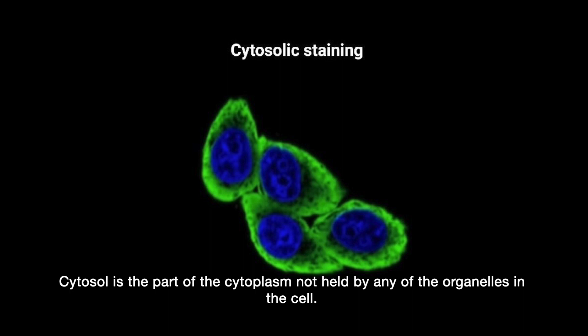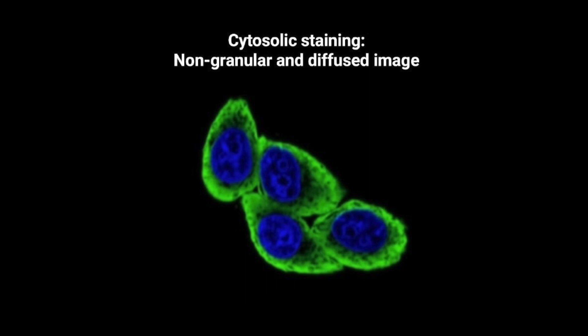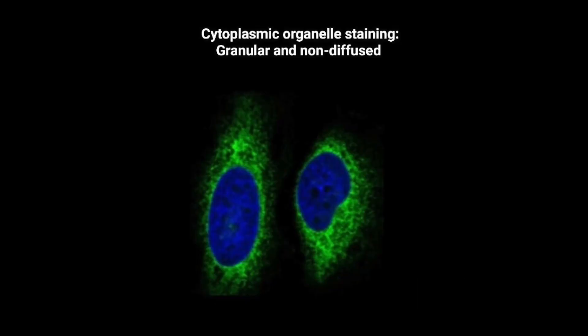It is actually the cytosol. The cytoplasm of a cell consists of both the cytosol and the organelles. Cytosol is the part of the cytoplasm not held by any of the organelles in the cell. Cytosol proteins are able to diffuse and distribute all over the cells, thus forming a non-granular and diffused image. On the other hand, cytoplasmic organelle staining is usually granular and non-diffused like this, as proteins in organelles are not able to freely diffuse all over the cell, thus forming a granular image.